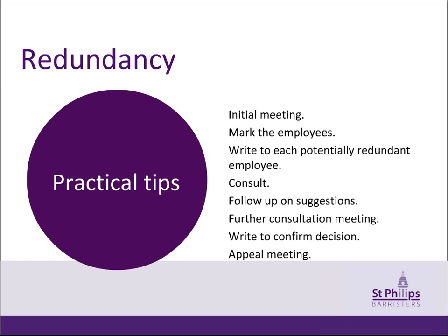First, have an initial meeting with all the potentially redundant employees to explain the reasons for the potential redundancies and that although the employer has looked at alternatives, there don't appear to be any viable alternatives to redundancy at the current time. The employer should explain how many jobs are at risk and the reasons for it. Redundancy should be presented as a possibility only at this stage, to avoid any claim that the decision has already been made. The potentially redundant employees should be asked to consider ways of avoiding redundancy. The employer should also explain the selection criteria it intends to use and ask for comments. The content of the meeting should be confirmed in writing to each potentially redundant employee.